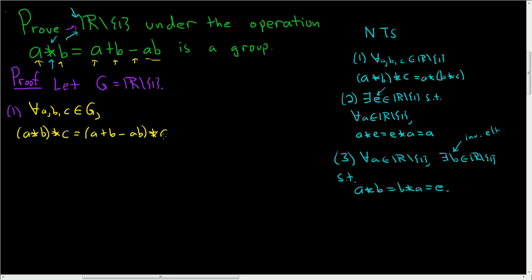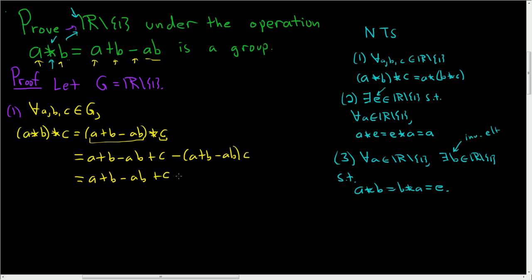We do it again — we add this result to c. So (a star b) star c expands to a plus b minus ab plus c, and then subtracting the product of that with c: a plus b minus ab plus c minus ac minus bc plus abc. There's not much more we can do here.